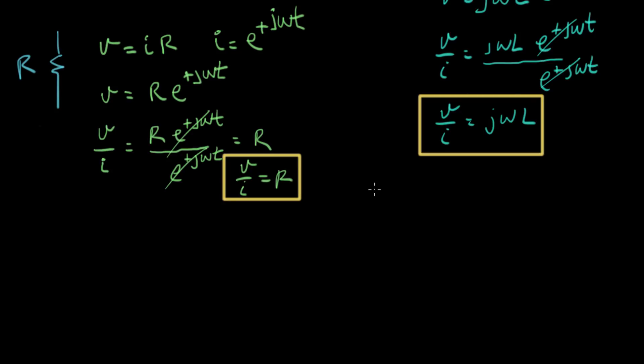Now we'll do the same thing for a capacitor. So here's a capacitor, with its capacitance value in farads. And for the capacitor, we know that I equals C times dV dt. And this time, let's let V of t equal e to the plus j omega t. So this time we're going to force a voltage across our capacitor that is this complex exponential.